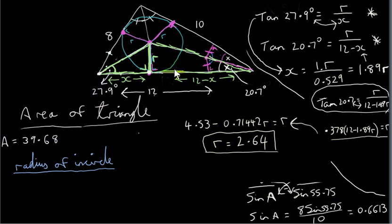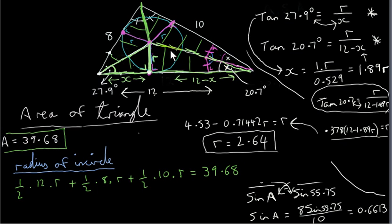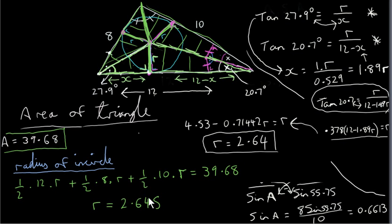Now a much easier way to get that value is to look at the big triangle and divide it into three green triangles, then get the areas of the three green triangles and equate them to the area of the overall triangle. The area of the first green triangle is half the base (12) times the perpendicular height R, plus half times 8 times R, plus half times 10 times R. The areas of the three triangles must equal the area of the big triangle, which is 39.68. Solving this equation leads to a value of R of 2.645, which is very close to the previous answer.